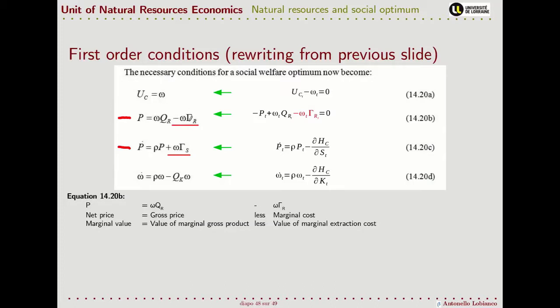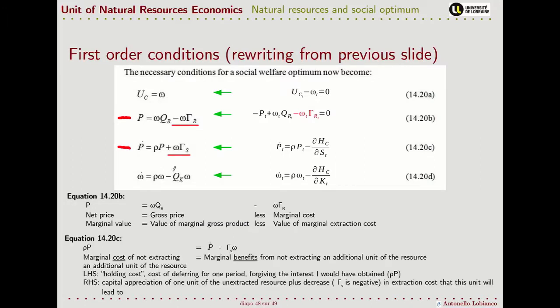Concerning the dynamic efficiency conditions, we can interpret them more easily when we write them in these terms. We can compare the cost versus the benefits of non-extracting the resource. When we do not extract the resource, we have some shadow cost - we get rid of the possibility of getting a given price and investing it at the raw interest rate.